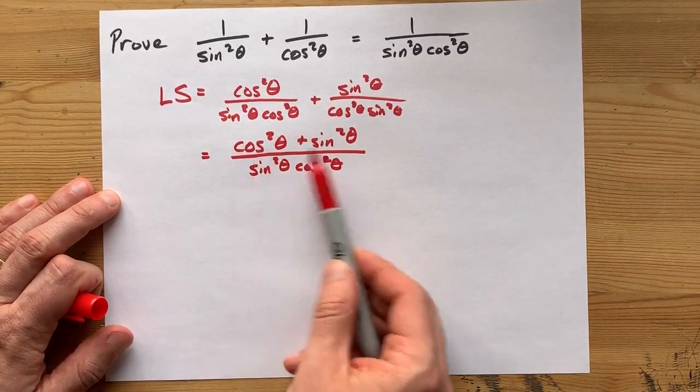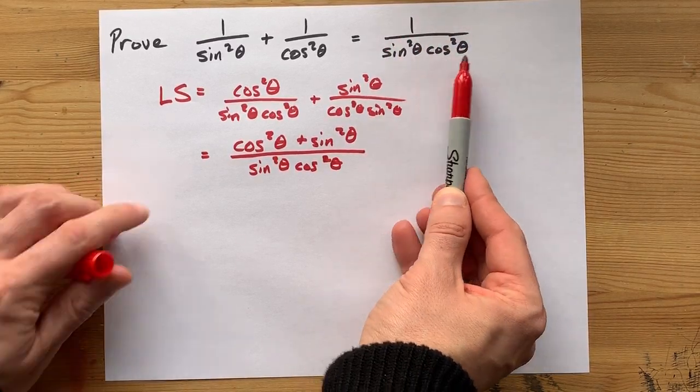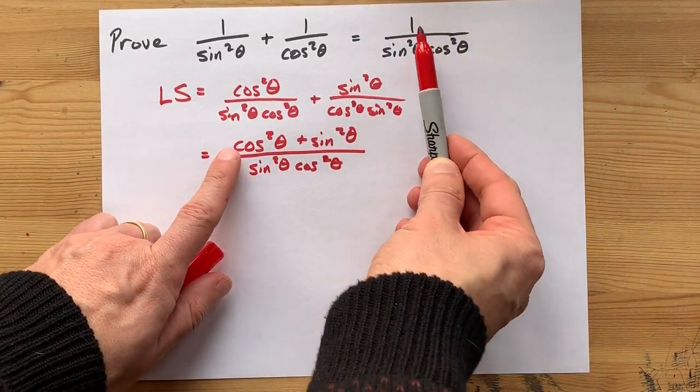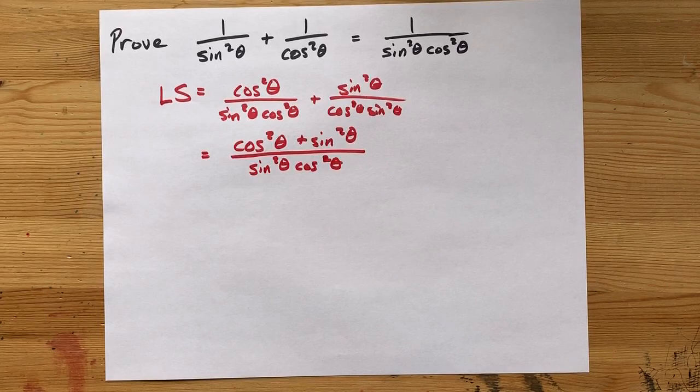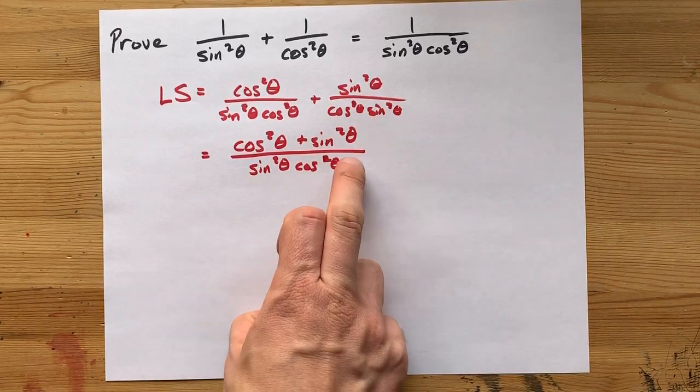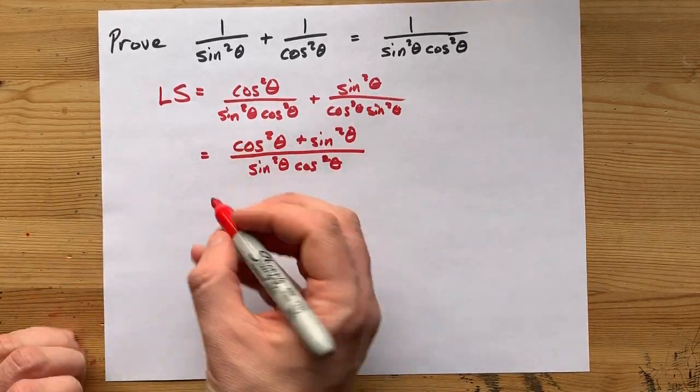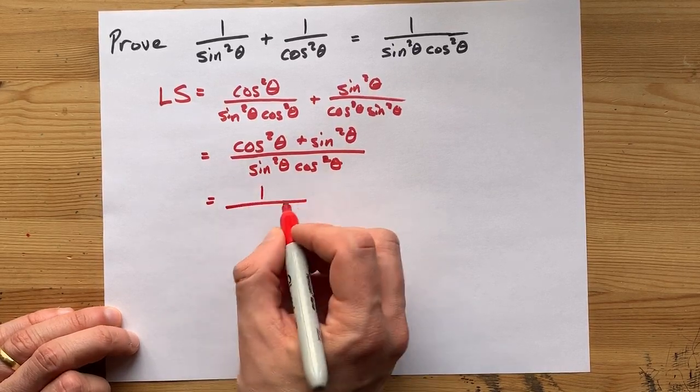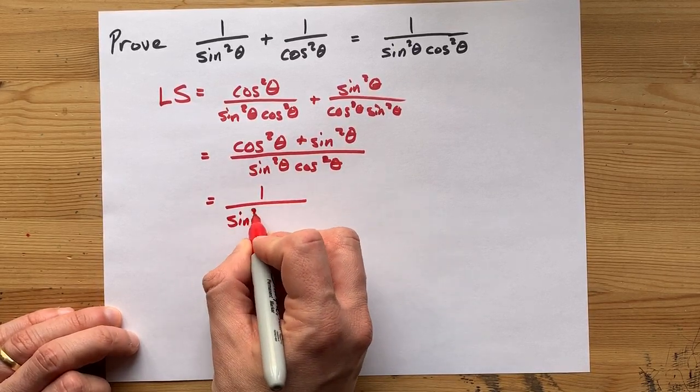Now, if you don't know where we're going from here, I want you to look at the answer we're looking for. The bottoms already match, but the top needs to become 1. Oh, great, cosine squared plus sine squared is always equal to 1. That's the Pythagorean identity.